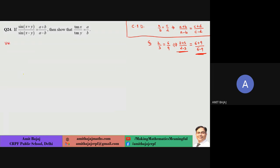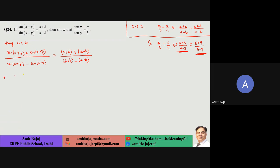Using C&D on the LHS: numerator plus denominator upon numerator minus denominator. On the RHS the same operation is applied. Then expanding using the formula: sin(x+y) = sin a cos b + cos a sin b, and sin(x−y) = sin a cos b − cos a sin b.